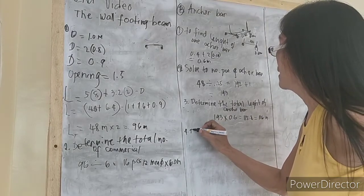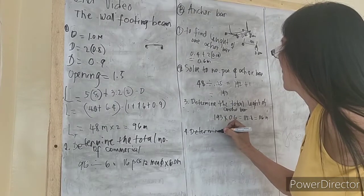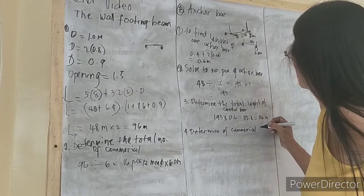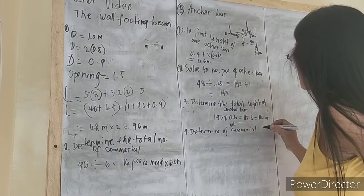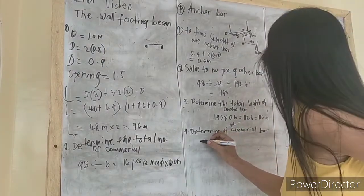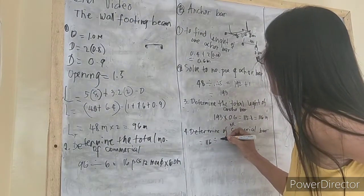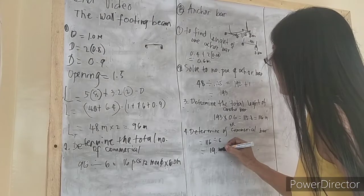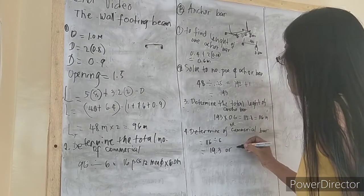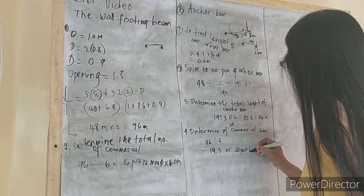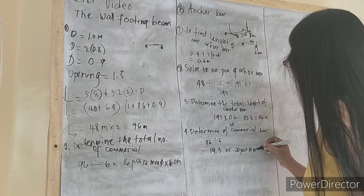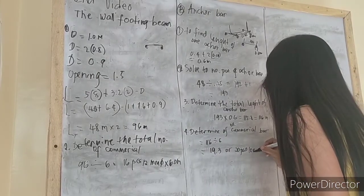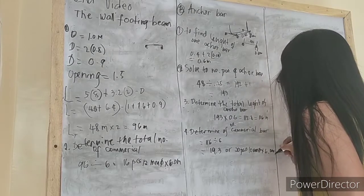Number 4: determine the number of commercial bars. 116 divided by 6 equals approximately 19.3, rounded up to 20 pieces of 10mm diameter by 6 meters. That is now done.